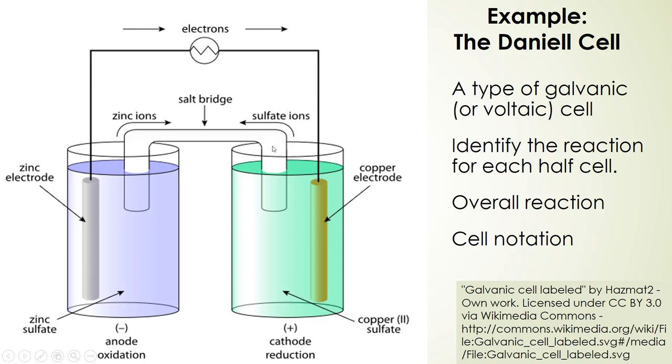This is the salt bridge, and sulfate ions are going to be going in the opposite direction from the electron flow, which is going to go from the anode to the cathode. In the cathode compartment, we have a copper electrode and copper sulfate in solution. The cathode involves reduction, and electrons are going to flow from the anode to the cathode.